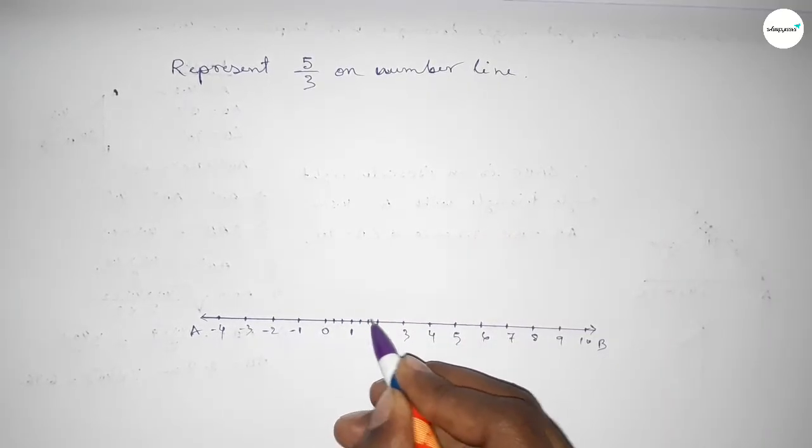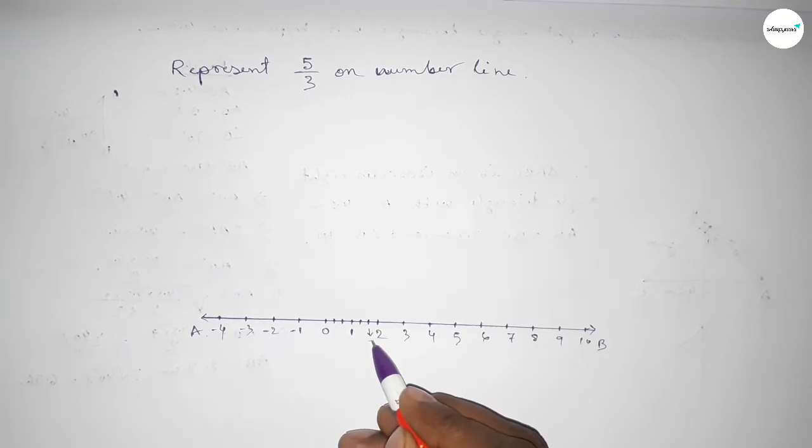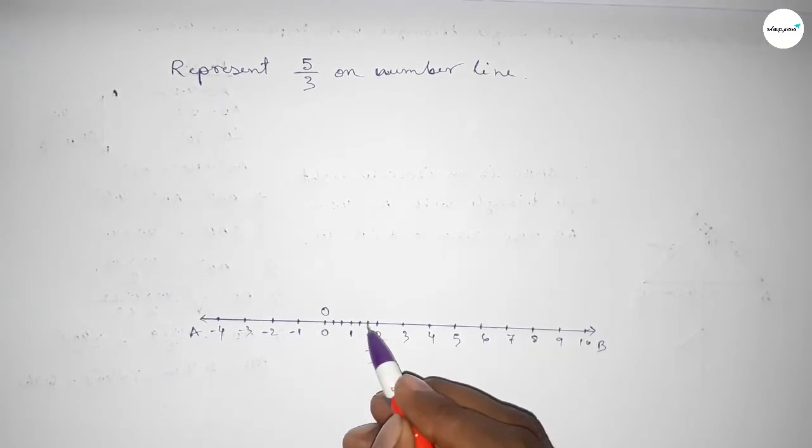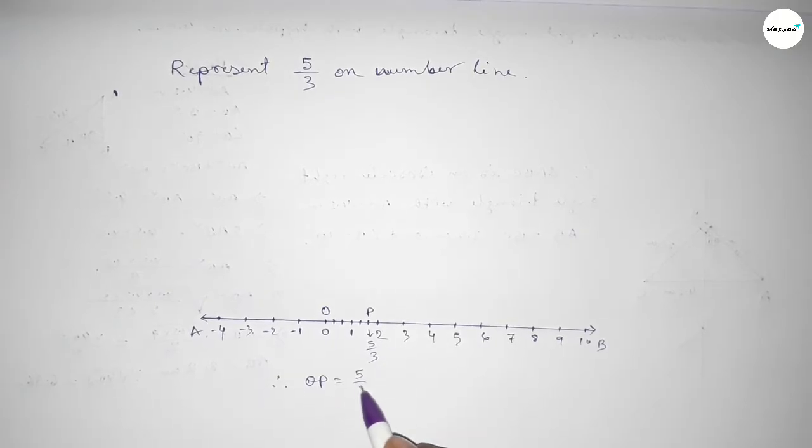Mark the numbers with deep color. So this is 1/3, 2/3, 3/3, 4/3, and this is 5/3 on the number line. This is O and P, so therefore OP equals 5/3 unit.